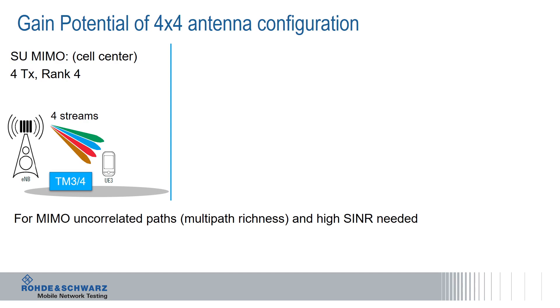Welcome to this short video about the gains of a 4x4 MIMO antenna configuration. I am Hans Sibyla, technology marketing manager at Rohde & Schwarz for mobile network testing. I want to discuss all possible improvements offered by a 4x4 MIMO antenna configuration, which means four transmitters at the base station side and four receivers on the UE side.